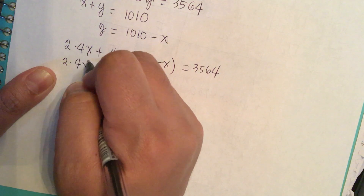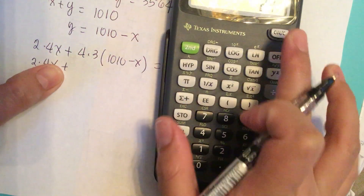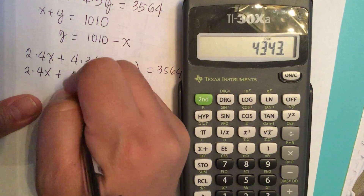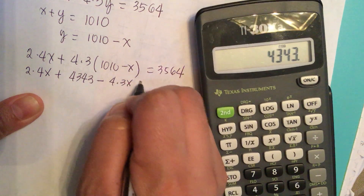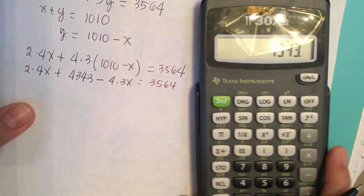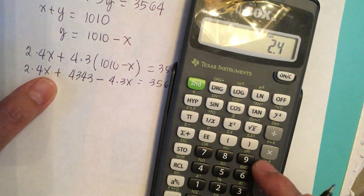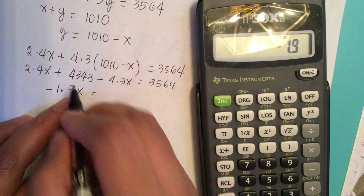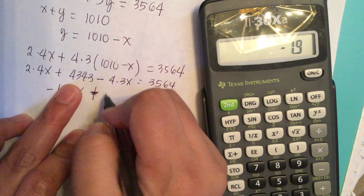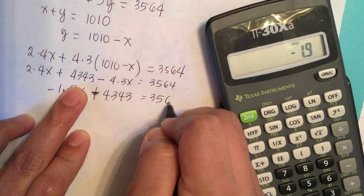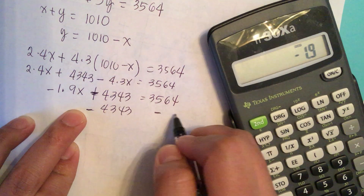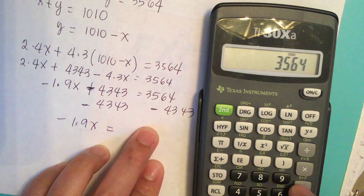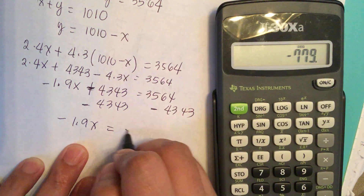Expanding: 4.3 times 1010 equals 4343, so we have 2.4x plus 4343 minus 4.3x equals 3564. Combining the x terms: 2.4x minus 4.3x gives negative 1.9x. We subtract 4343 from both sides: negative 1.9x equals 3564 minus 4343, which equals negative 779.